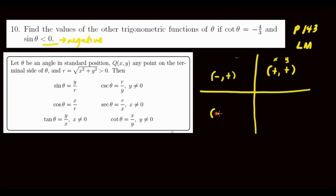On quadrant three, both x and y are negative. So cotangent here is negative over negative, which is positive — so not this one. On the fourth quadrant, x is positive and y is negative. So cotangent is also negative because it's positive over negative. So we're down to two candidates: quadrant two and quadrant four. But we also need cotangent to be negative — that holds for both.